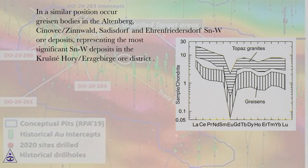In a similar position occur greisen bodies in the Altenburg, Cinovec/Zinnwald, Sadesdorf and Ehrenfriedersdorf SnW ore deposits, representing the most significant SnW deposits in the Krusne hory/Erzgebirge ore district.